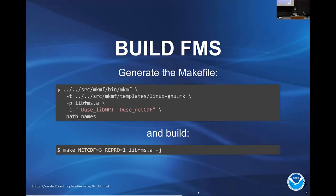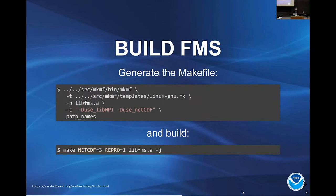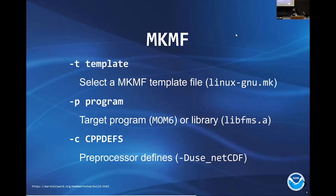So to summarize what I just did: I ran the mkmf script with a template command, set a target of 'libfms', specified macros — the first one turns on MPI and the second turns on NetCDF — then gave it the list of files to compile. Inside the Makefile template there are a few extra flags that I'll go over in a moment. The hardest thing on any new machine is figuring out how to construct a template for it.